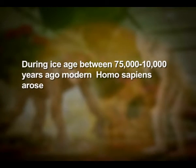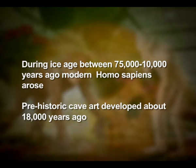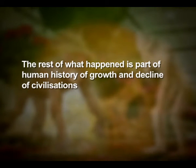Homo sapiens arose in Africa and moved across continents, developing into distinct races. During the ice age, between 70,000 to 10,000 years ago, modern Homo sapiens arose. Prehistoric cave art developed about 18,000 years ago. Agriculture came around 10,000 years back and human settlement started. The rest of what happened is part of human history — the growth and decline of civilizations.